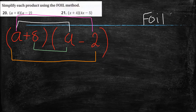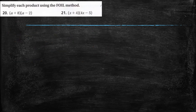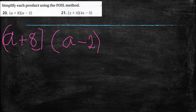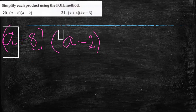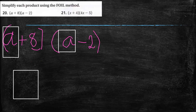Now I multiply all of the terms. F — first: a times a equals a squared. I wrote it here: a squared.